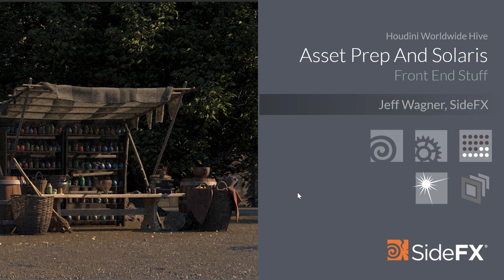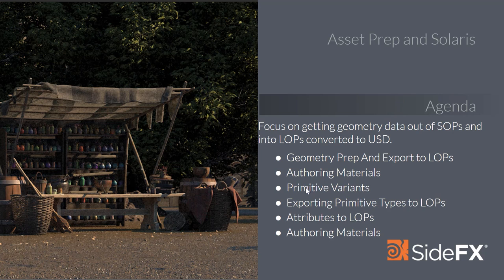The agenda for today covers: geometry prep and exporting into LOPs, authoring materials, and primitive variants — a USD composition arc that's very powerful where you can create a single asset definition with multiple variants. We'll also look at exporting different primitive types to LOPs — everything from polygons to NURBS to volumes — and how geometry attributes get into LOPs.